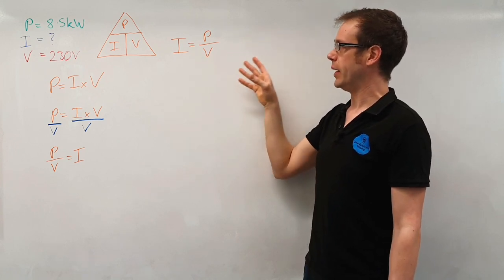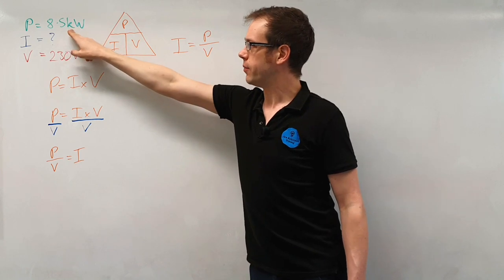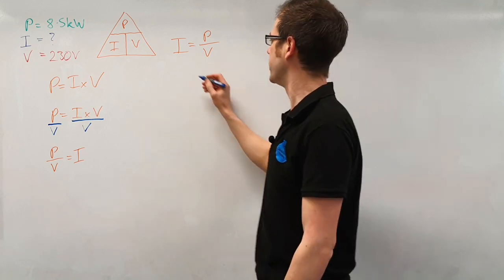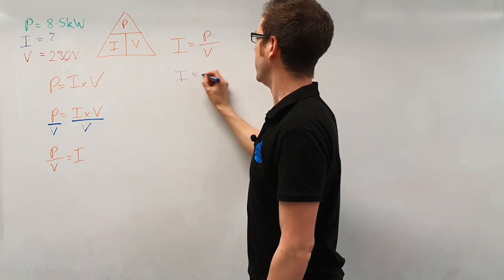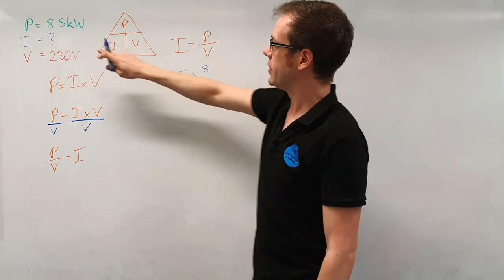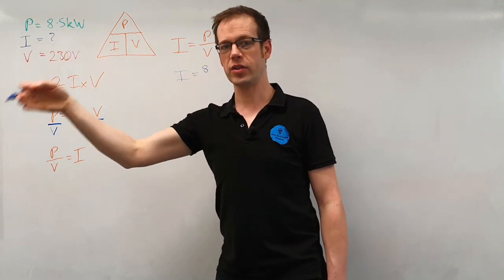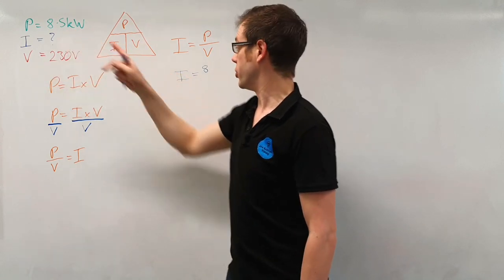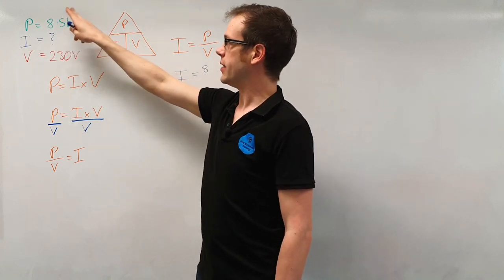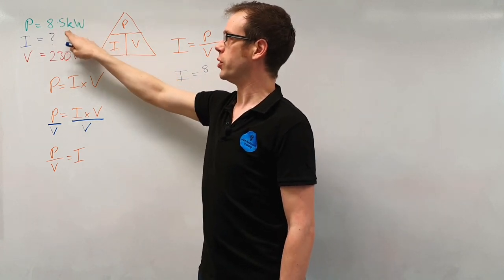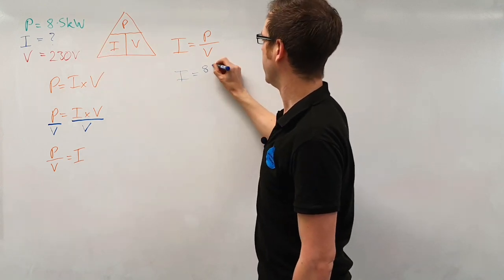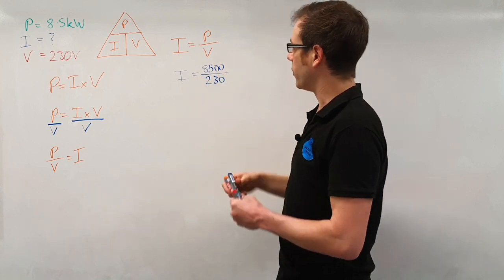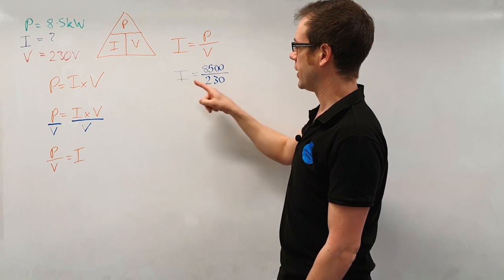Whichever way you do it we've got our formula I equals P over V. We know what P is, we know what V is, so the next thing we can do is just very simply put these values into our calculation. So we can say that I will be equal to 8.5 kilowatts. Now because this is 8.5 kilowatts, the kilo means thousand. You can swap that out for times 10 to the power of 3. That times 10 to the 3 means move the decimal point one, two, three spaces and it becomes eight thousand five hundred, divided by 230.